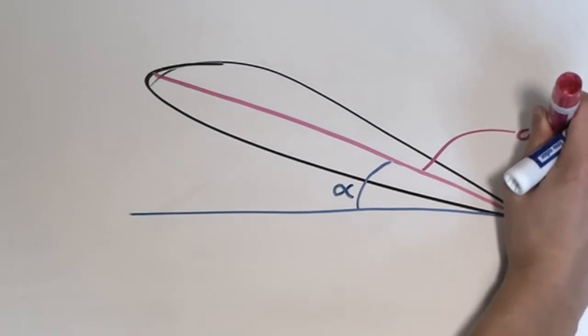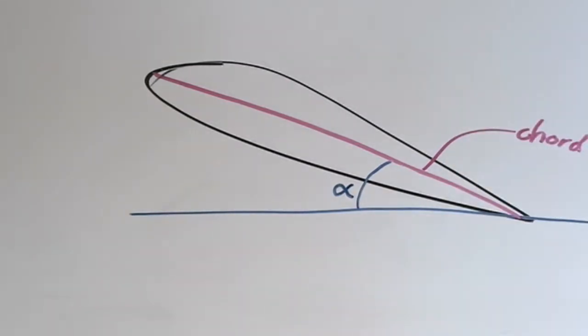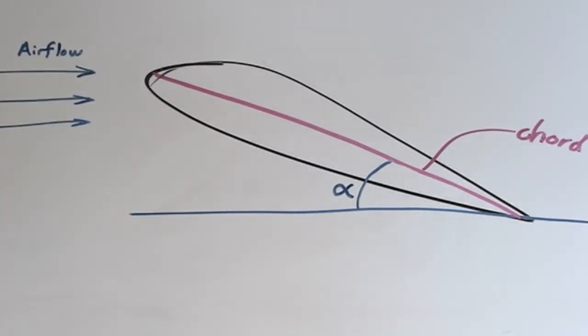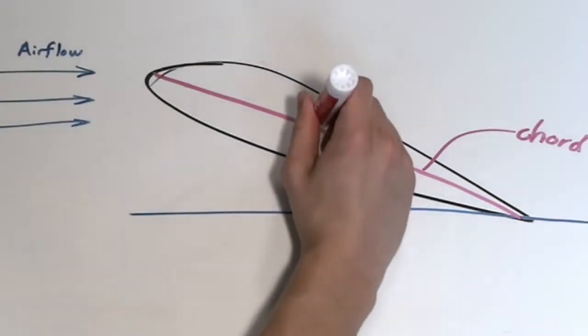The angle of attack of each airfoil is the angle made between the horizontal and the chord of the airfoil. The chord is the line that connects the tip of the airfoil to the tail of it. So when the angle of attack is being varied, we're changing the angle at which the drone will be oriented as it moves through the air.